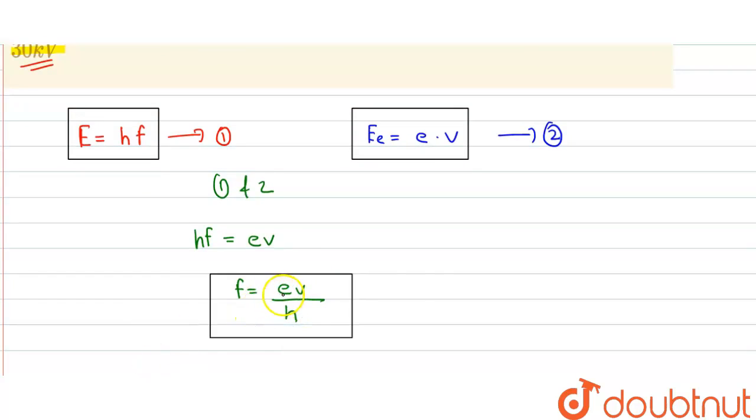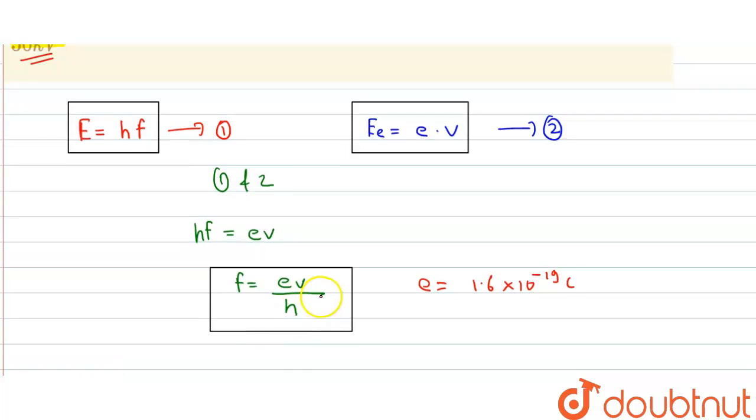The value of e = 1.6 × 10^-19 coulombs. The voltage V given in the question is 30 kilovolts, which we can write as V = 30 × 10^3 volts.